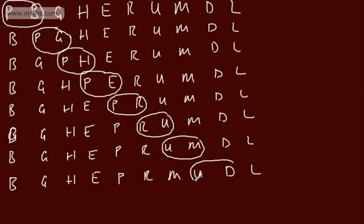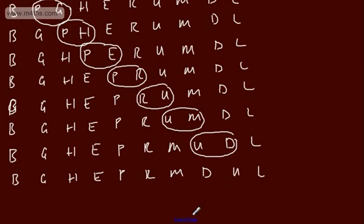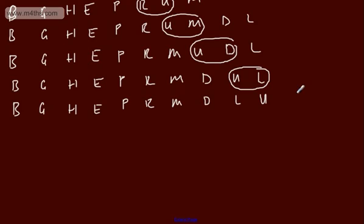Next: U and D — swapping. Then U and L — swapping. List is now: B, G, H, E, P, R, M, D, L, U. End of first pass. That's comparison by comparison. U is in the correct place at the end.